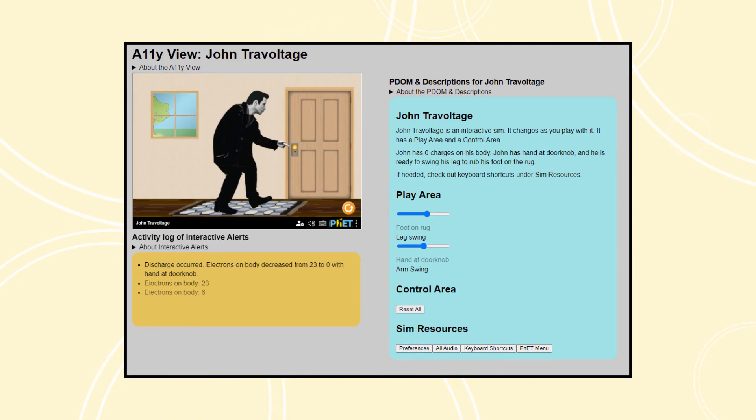If you would like to see the interactive description, you can use a tool called the A11y View. The A11y View displays a copy of the interactive description embedded in the simulation next to the simulation. A copy of the state descriptions are shown on the right side of the screen and a copy of the responsive descriptions are shown below the simulation.